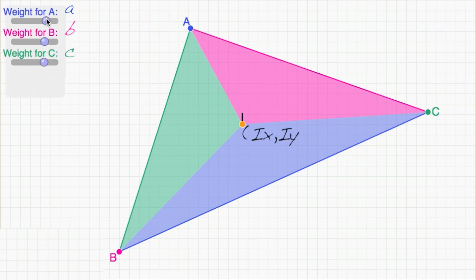Every point i in the plane of big A, big B, and big C can be written as a weighted average of big A, big B, and big C. If I pick little a, little b, and little c, so that they add to 1, then I can forget about the denominator.